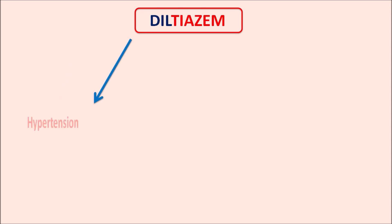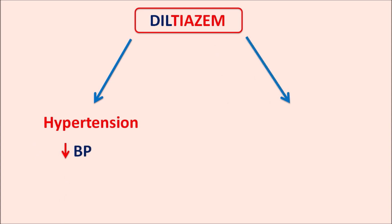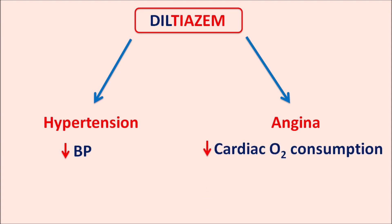The clinical uses of Diltiazem: since this drug acts on the vascular smooth muscle, it can be used in the treatment of hypertension, where it reduces blood pressure by vasodilation. Similarly, it can be used in the treatment of angina, particularly chronic stable angina, where it reduces contraction of the heart, thereby reducing cardiac oxygen consumption, improving the symptoms of angina.